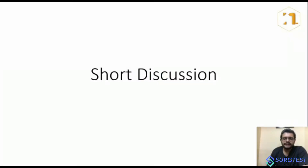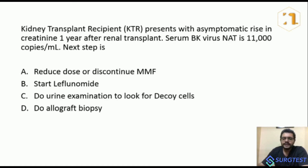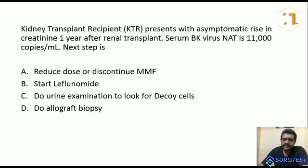Hi guys, I'm Dr. Nath and we'll have a short discussion based on an MCQ. A kidney transplant recipient presents with asymptomatic rise in creatinine one year after transplant. Serum BK virus nucleic acid testing is 11,000 copies per ml. The next step options are: A) reduce dose or discontinue MMF, B) start leflunomide, C) do urine examination to look for decoy cells, or D) do allograft biopsy.